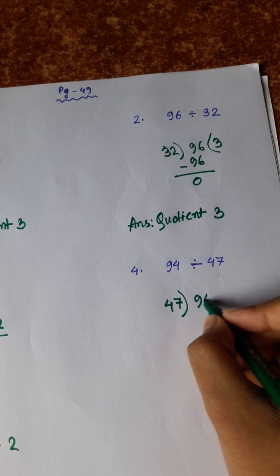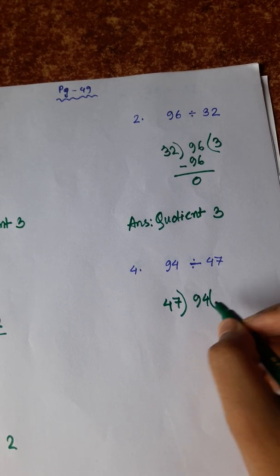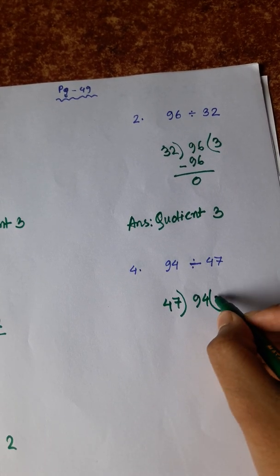94 divided by 47. 47 ones are 47, 47 twos are 94.